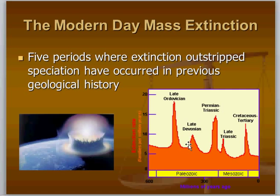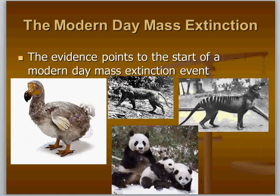The Permian-Triassic and late Triassic extinction events have different causes, but the pattern is clear — different mass extinction events caused by different factors down through geological history. All the evidence points to the start of another modern-day mass extinction event. We can look at organisms which have gone extinct, like the dodo and the thylacine or Tasmanian tiger, and species on the brink of extinction like the giant panda and the tiger, which is very much reduced throughout its range.